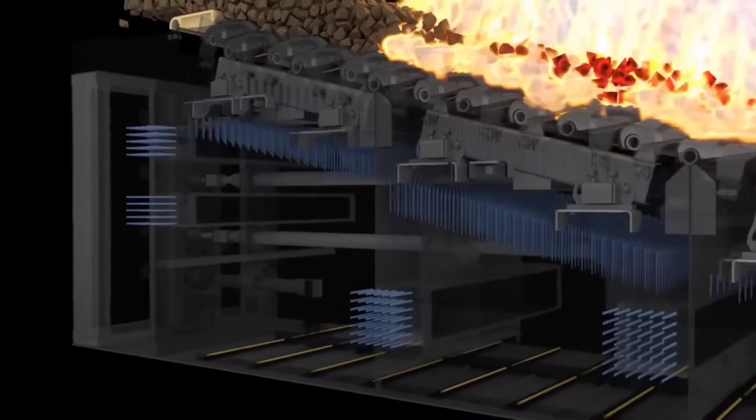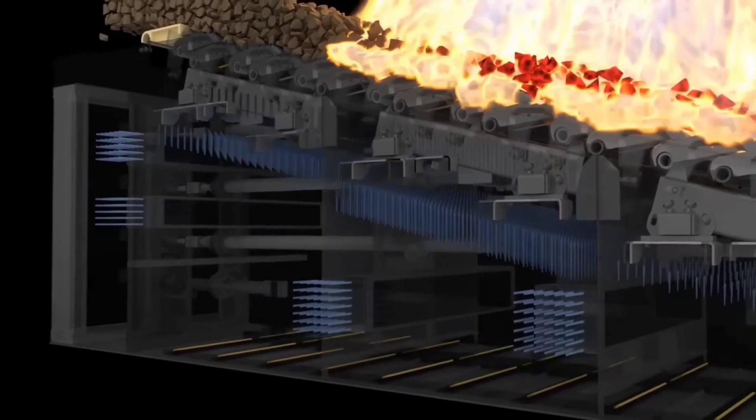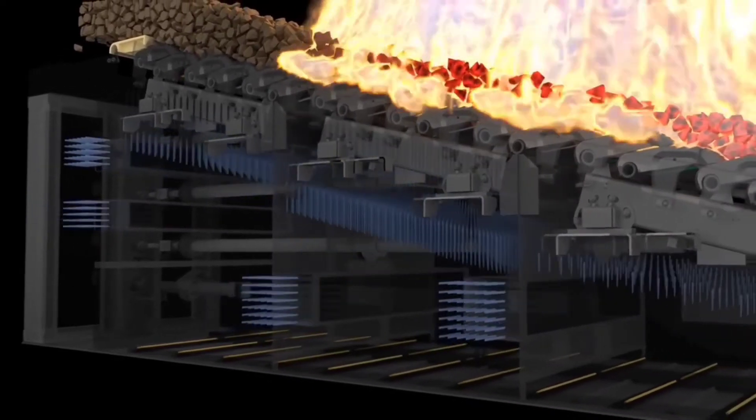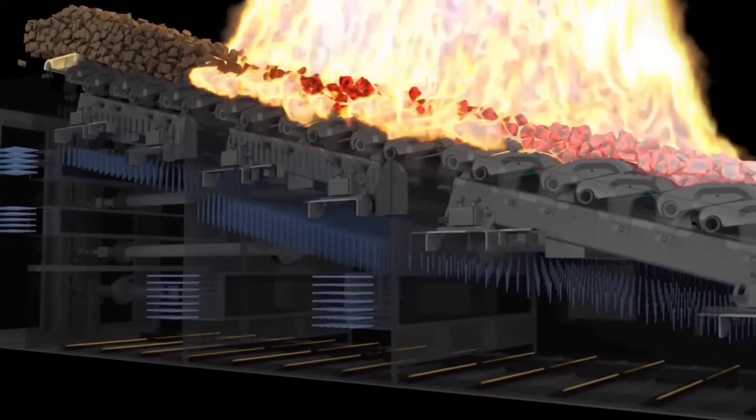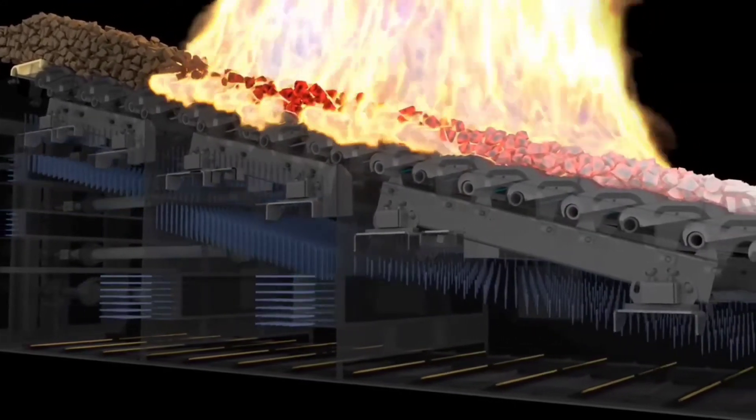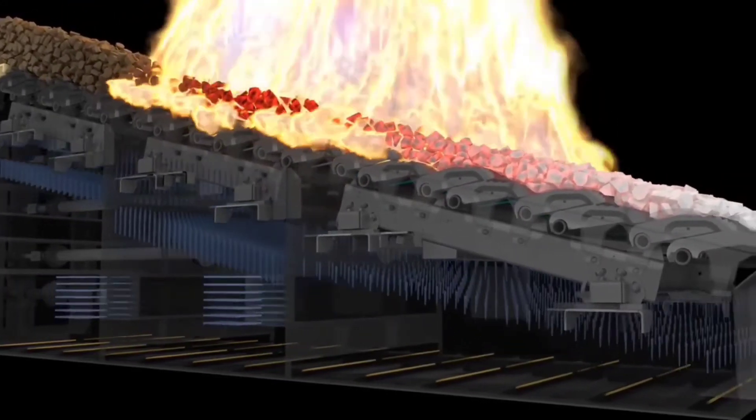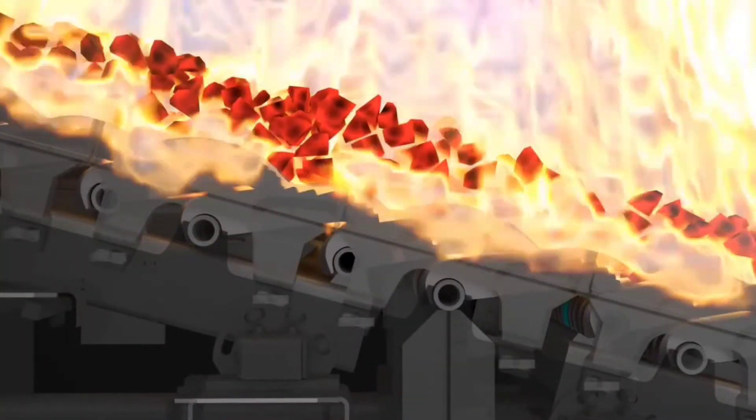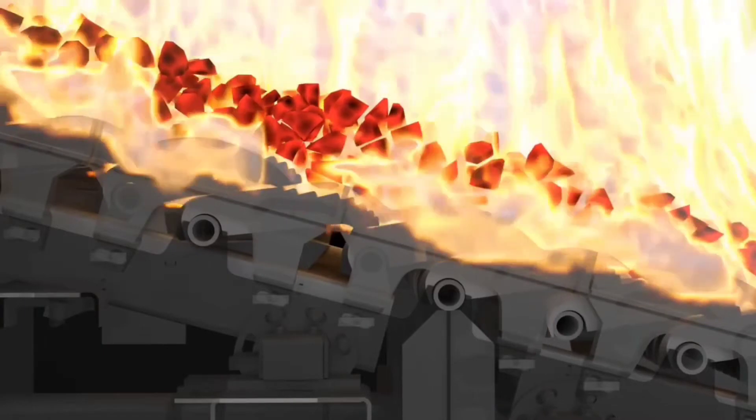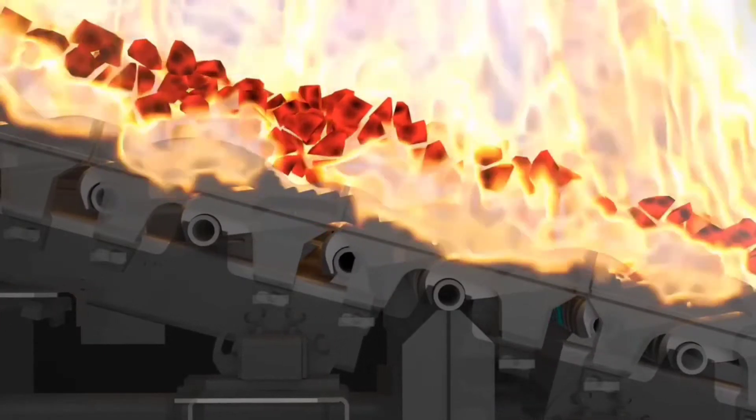Each section of grate consists of a hydraulically driven trolley and independent air supply. The speed of each trolley and its respective air control ensures the most efficient air to fuel ratio. Reciprocating motion gives toppling action to the fuel particles, ensuring complete combustion.